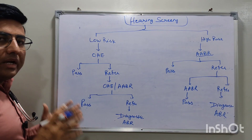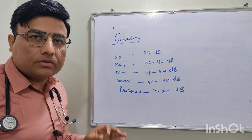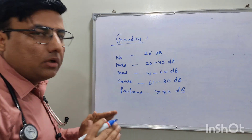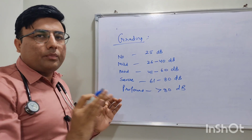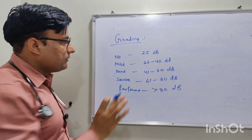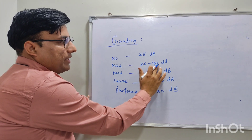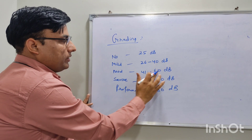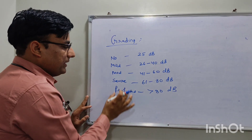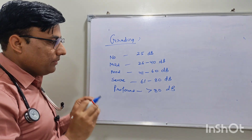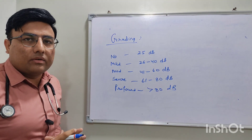Diagnostic ABR gives the grading of hearing loss. If a baby can hear up to 25 decibels, there is no hearing loss. Between 26 to 40 decibels is mild hearing loss. 41 to 60 decibels is moderate hearing loss. 61 to 80 decibels is severe hearing loss. If there is no response at 80 decibels, that is profound hearing loss.